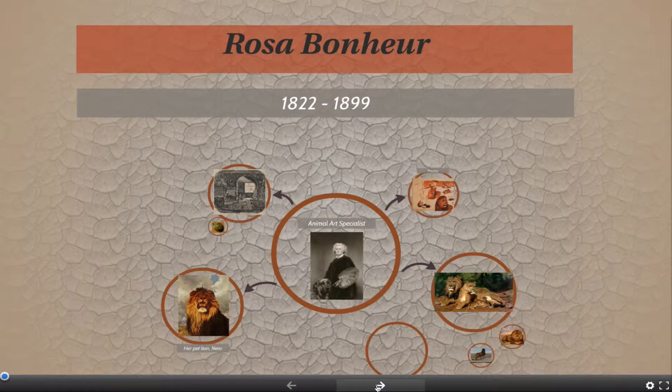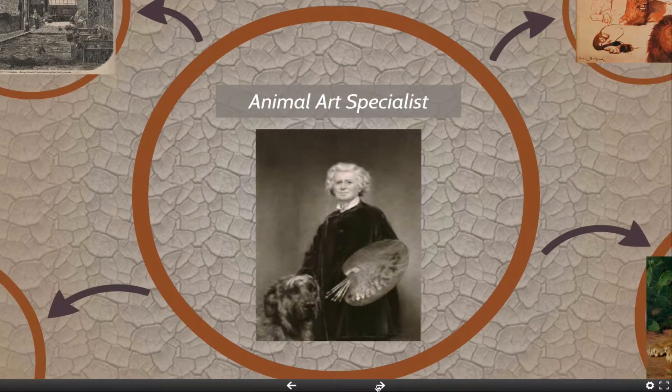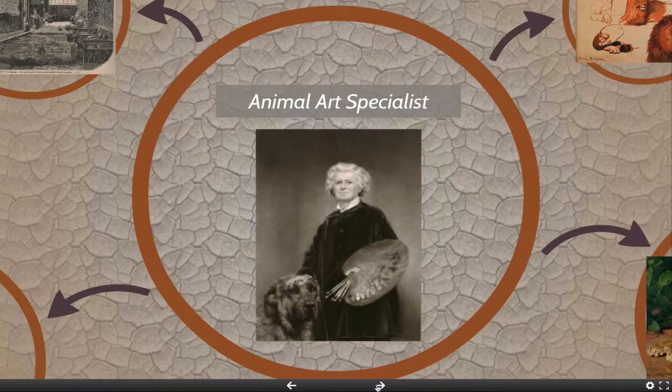Rosa Bonheur was born outside of Paris in 1822 to a family of artists. She became an art specialist, mostly by working with her father, who in his large paintings employed all of his children to assist him.